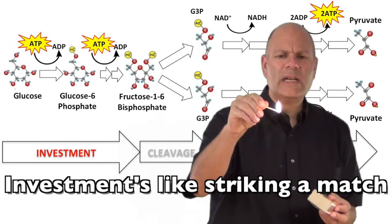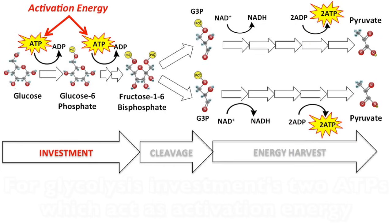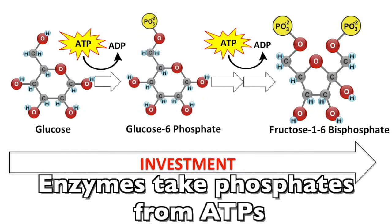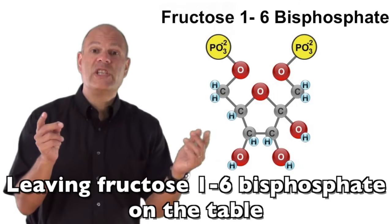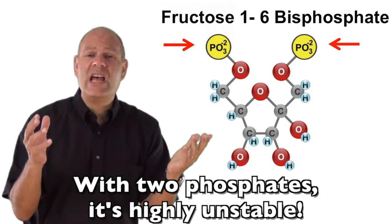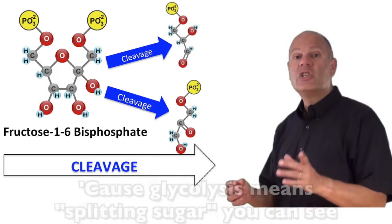Investments, like striking a match — that energy you put in makes the fire catch. For glycolysis, investments: two ATPs, which act as activation energy. Enzymes take phosphates from ATPs, jam a monoglucose, rearranging it to fructose, leaving fructose 1,6-bisphosphate on the table. With two phosphates, it's highly unstable, moving us to the second phase: the cleaving of fructose bisphosphate.